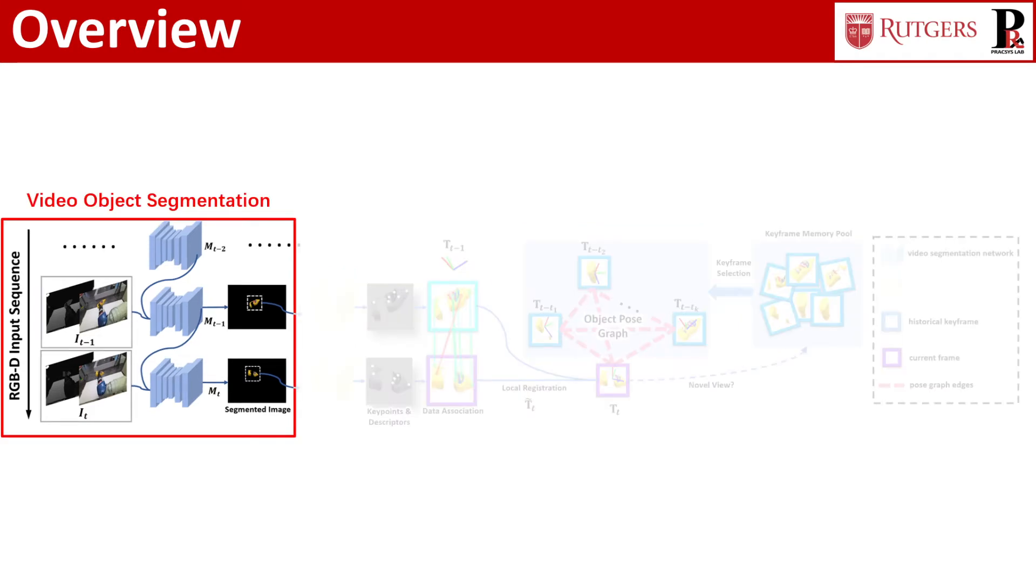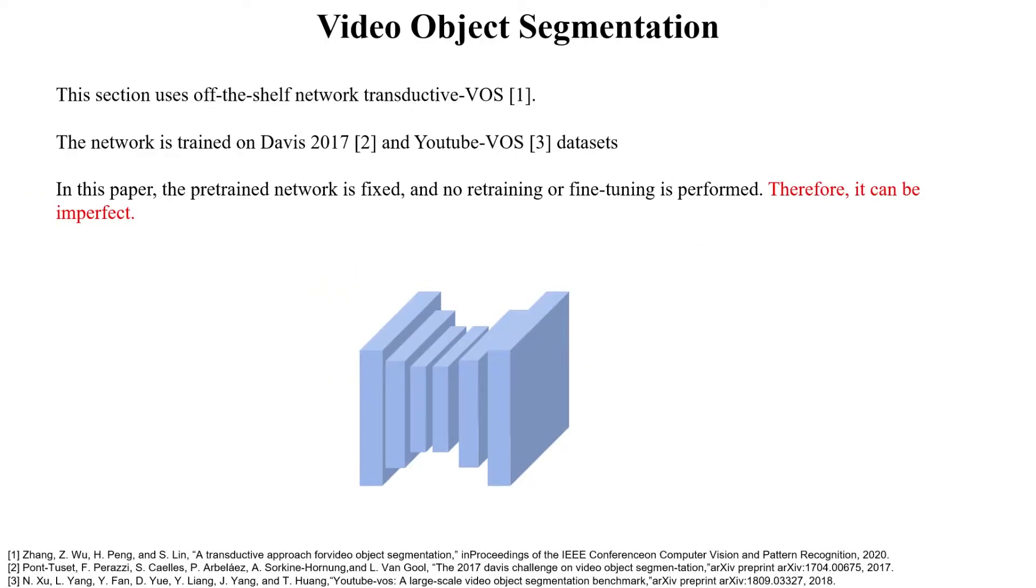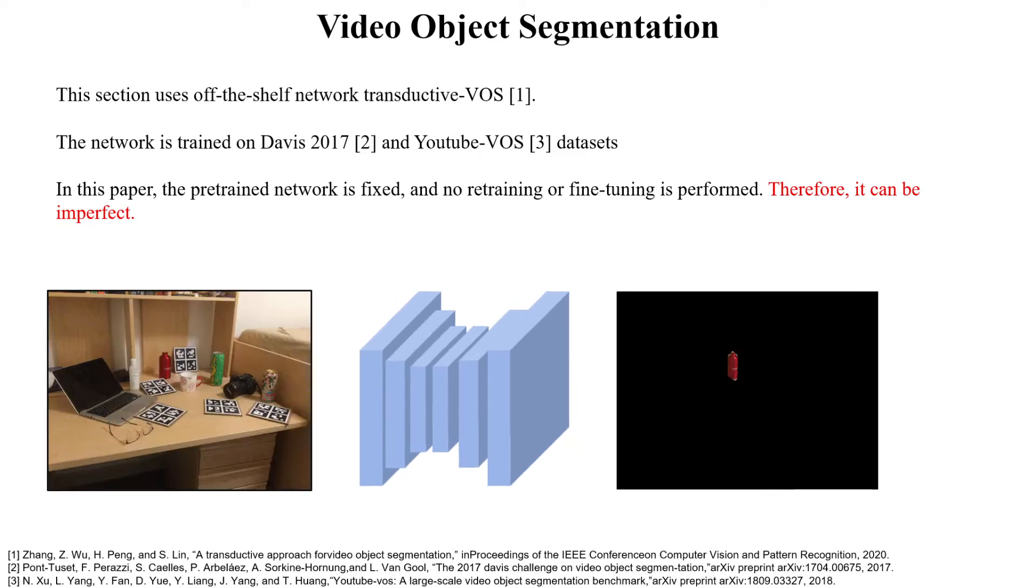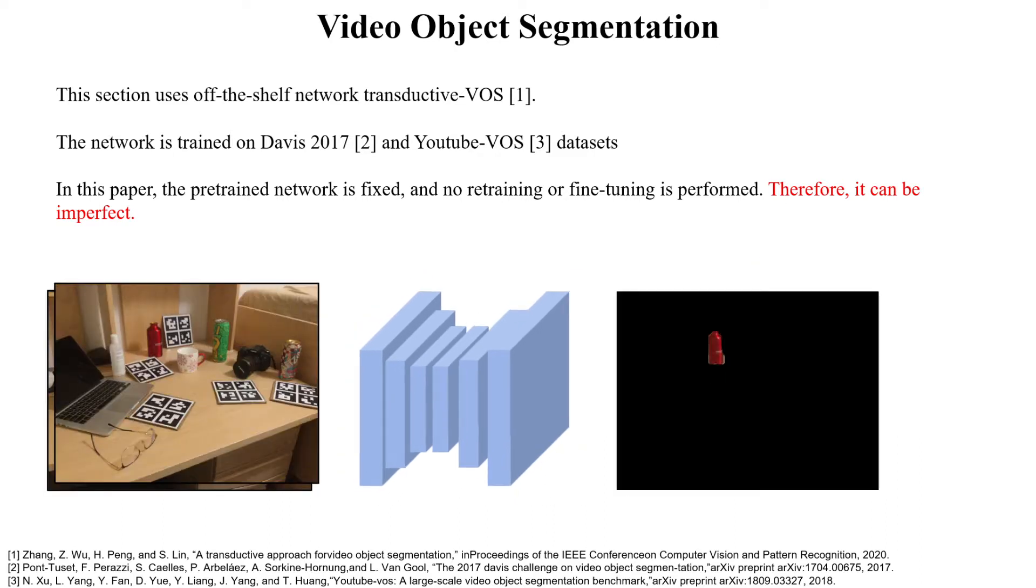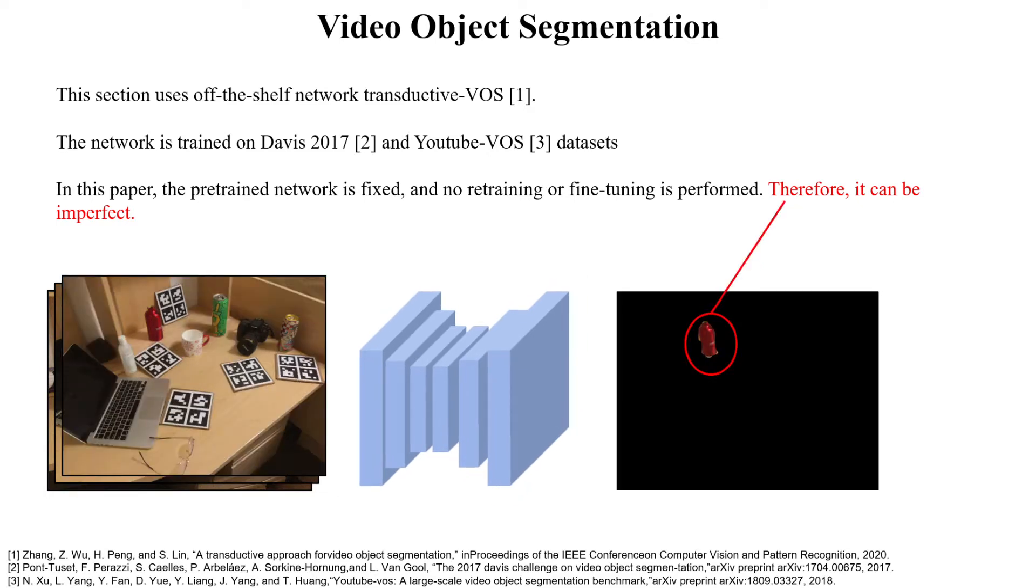For video segmentation, we use off-the-shelf network Transductive VOS. The network is trained on Davis 2017 and YouTube VOS datasets. In this paper, the pre-trained network is fixed and no pre-training or fine-tuning is performed. Therefore, it can be imperfect. However, BundleTrack is robust to such noisy segmentations as shown in the later experiments.